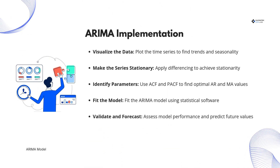Now let's look at the steps involved in implementing ARIMA. The first step is to visualize the data by plotting the time series to detect trends and seasonality. Next, we ensure the series is stationary by applying differencing if needed. Then we use ACF and PACF plots to identify optimal AR and MA values. After determining the parameters, we fit the ARIMA model using statistical software. Finally, we validate the model's performance and generate forecasts to predict future trends.